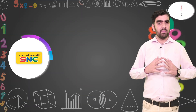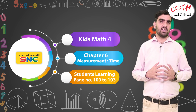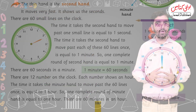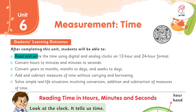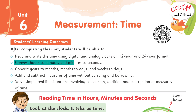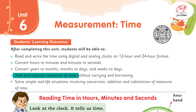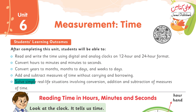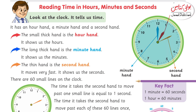Assalamu alaikum, respected teachers. My name is Rana Usman. Welcome to Javed Publishers. Today we are going to discuss Kids Mathematics Class 4, Chapter 6. In unit number 6, Measurement of Time, we are going to study: read and write the time using digital and analog clocks, convert hours to minutes and minutes to seconds, convert years to months, months to days, and weeks to days, add and subtract measures of time, and solve simple real-life situations. You can see here an analog clock with three needles: blue, red, and orange.